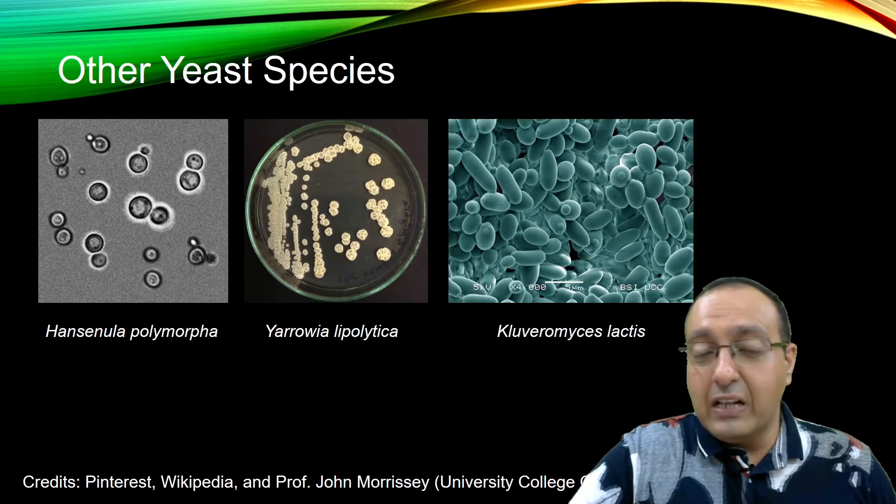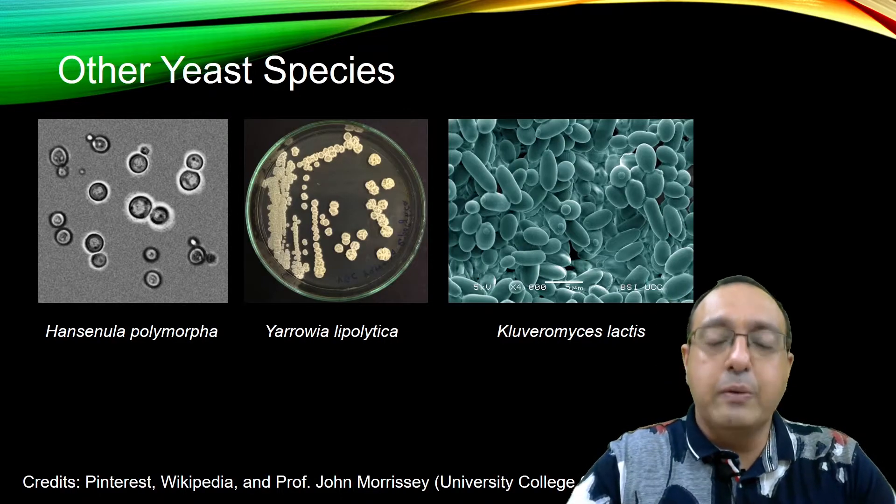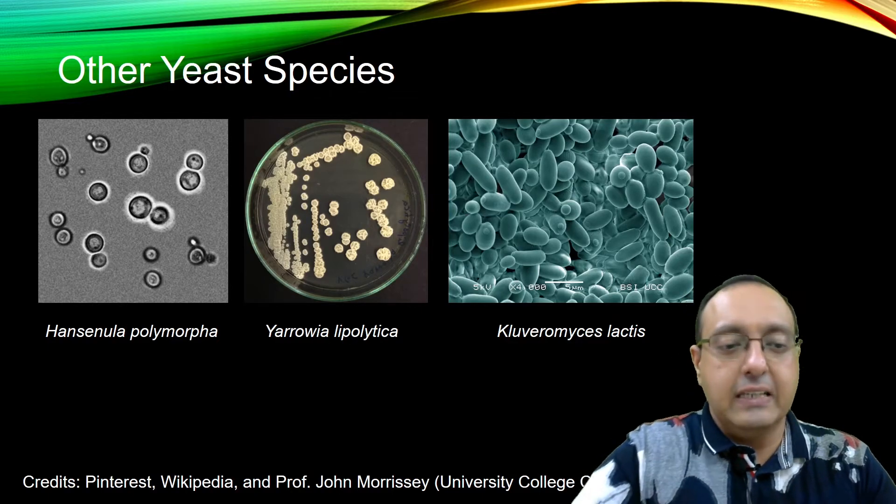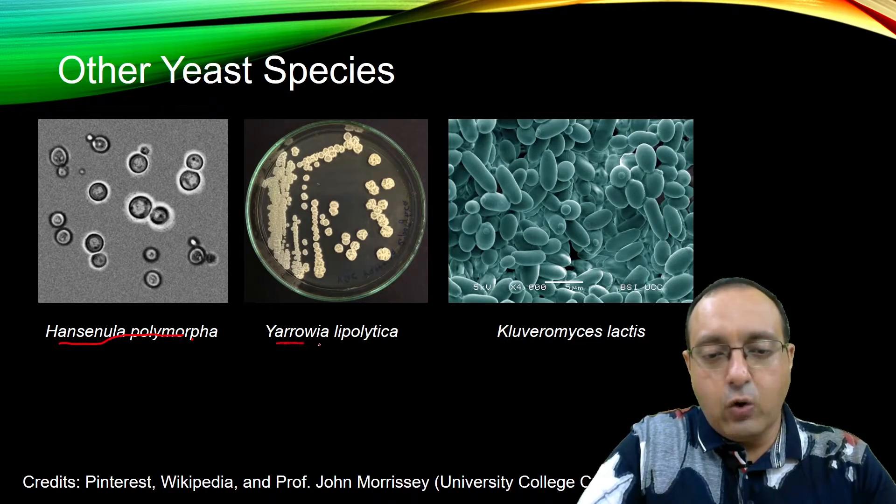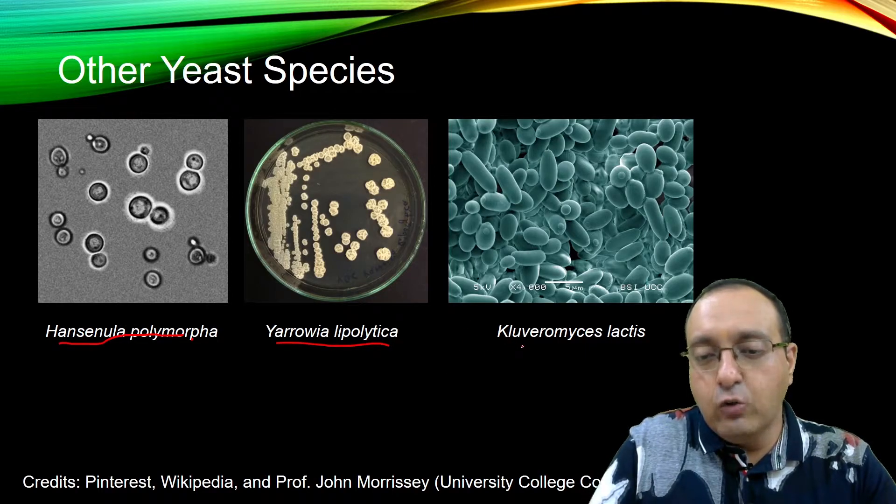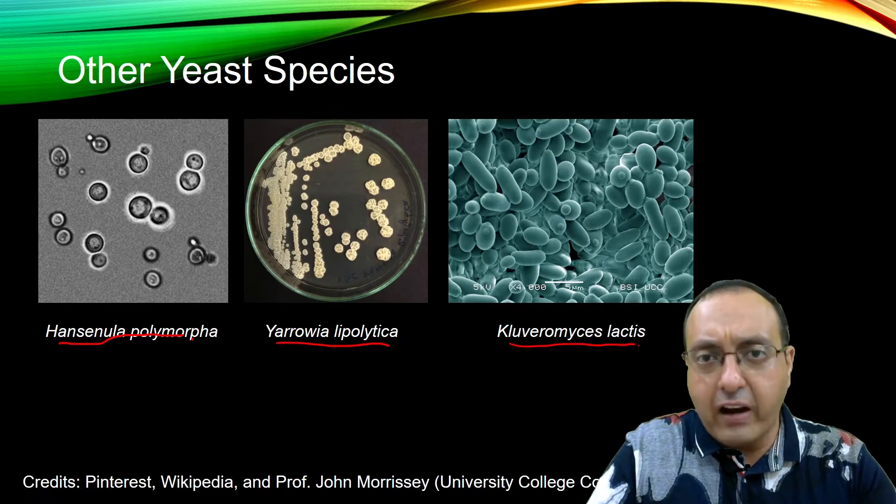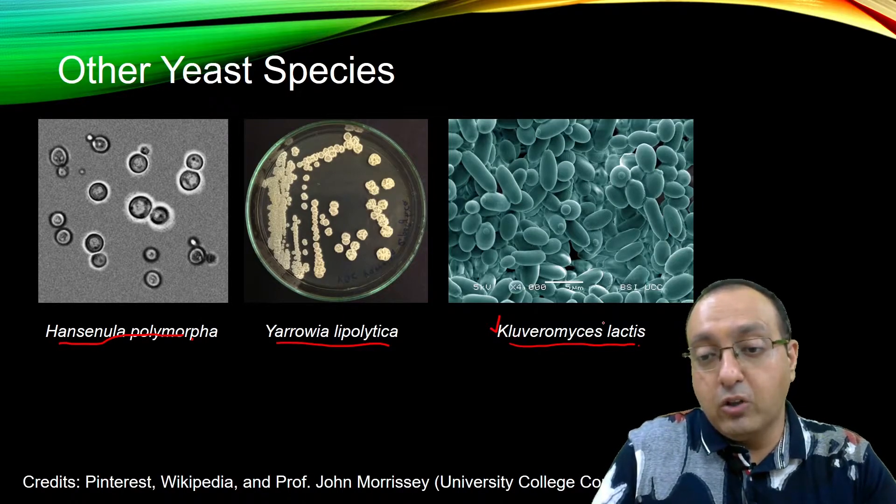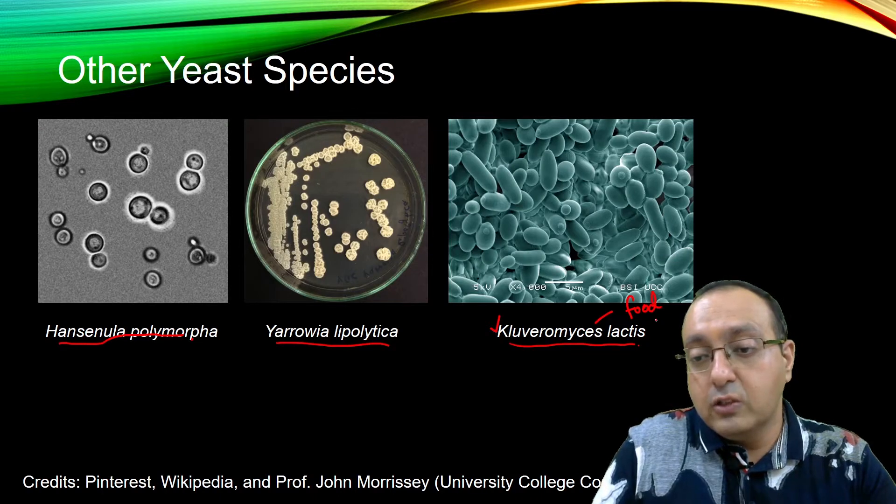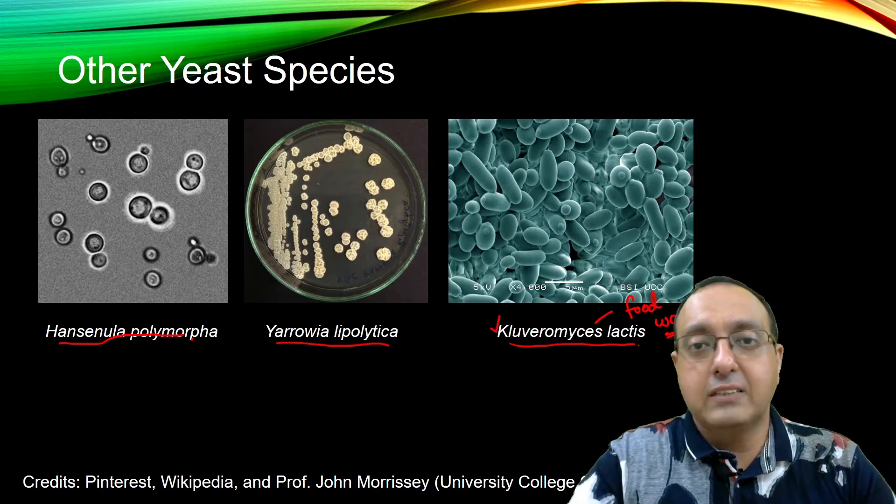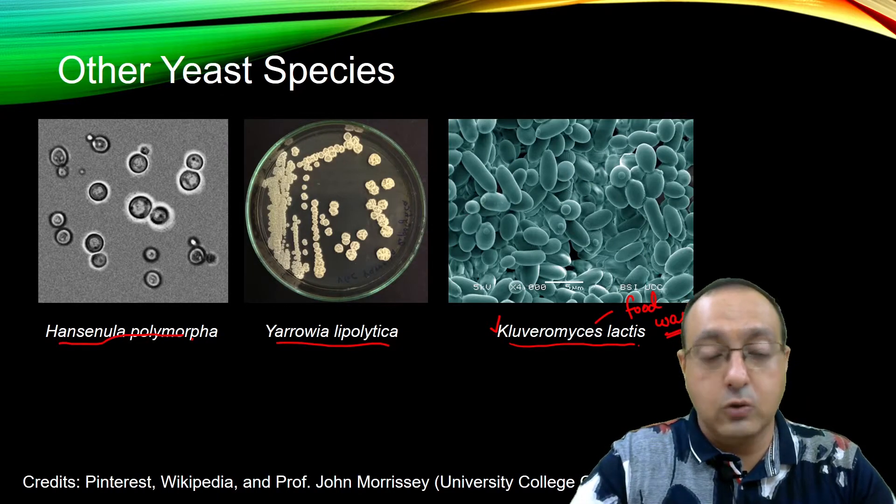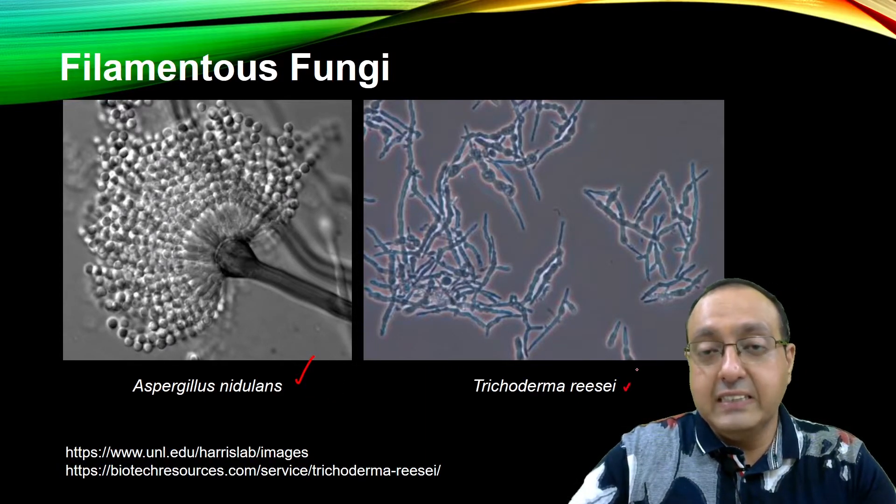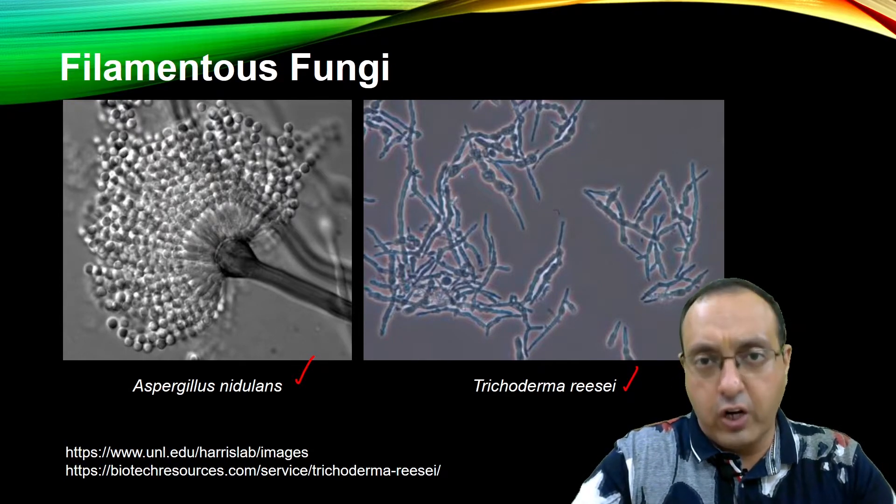Anyhow, we can use other yeast species as well. So depending upon these limitations, people are always coming up with more and more yeast species that they can manipulate and they can use as bio factories, basically. For example, Hansenula polymorpha, Yarrowia lipolytica. These are all yeast species and Kluyveromyces lactis. These are emerging as prominent bio factories for expressing eukaryotic proteins. Kluyveromyces lactis is especially promising because it can be grown on food waste also. So very good for turning waste into something useful. And other filamentous fungi, for example, Aspergillus nidulans and Trichoderma reesei. These are also emerging as good model systems for expressing eukaryotic proteins.